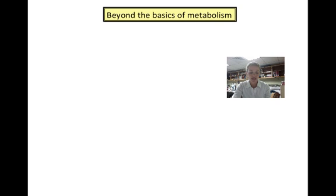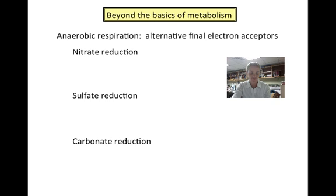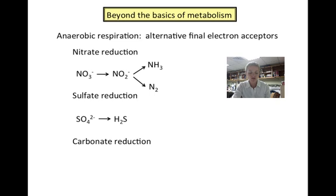Although we have not discussed it to this point, it is possible for respiration to occur in the absence of oxygen. This is called anaerobic respiration, and it requires a different final electron acceptor. Three of the common ones are the nitrate, sulfate, and carbonate ions. Nitrate gets reduced to nitrite, which can be even further reduced to ammonia or nitrogen gas. Nitrate tubes test for the ability of organisms to use nitrate as a final electron acceptor. Sulfate gets reduced to hydrogen sulfide gas, and SIM tubes test for the ability of organisms to use sulfate as a final electron acceptor. Carbonate (CO₃²⁻) gets reduced to methane.